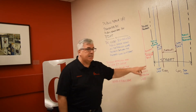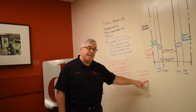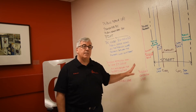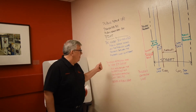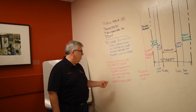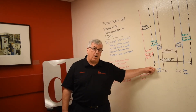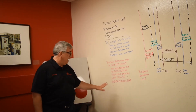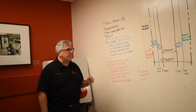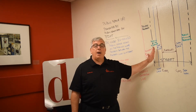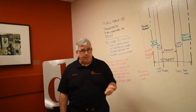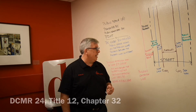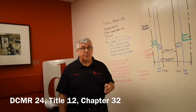There's a special area inside of private property designated when there's a building restriction line. There isn't always a building restriction line, but when there is, it's important to know that it exists and how it's used. The building restriction area is defined in DC code as the area between the property line and the building restriction line. That is an area that's private property, but it's to be treated as public space — very much treated as though it were public parking. It's typically meant to be kept green, but you can have building projections that match the building projection code in DCMR Title 24, Chapter 12, Title 12, Chapter 32.